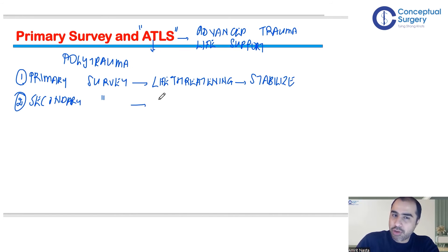In secondary survey, you do definitive management - detailed examination, detailed investigations, and specific treatment for the mechanism of injury. Get this first aspect very clear: any patient who comes with polytrauma, the first step is primary survey. What I'm going to discuss mainly today is primary survey. What is the aim? To identify life-threatening injuries that are causing immediate risk to life.